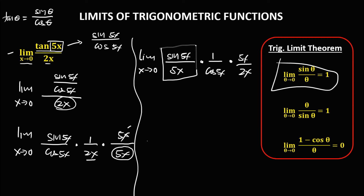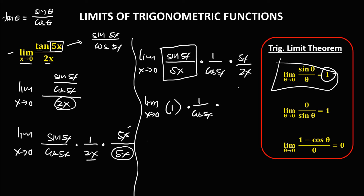Using the trigonometric limit theorem, sine(5x) over 5x equals 1. So we have the limit as x approaches 0: that factor equals 1, times 1, times 1 over cosine(5x), times — canceling the x — 5 over 2.